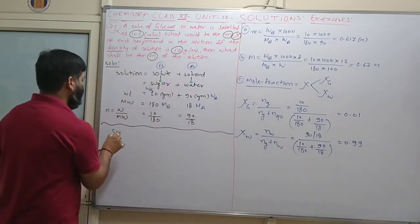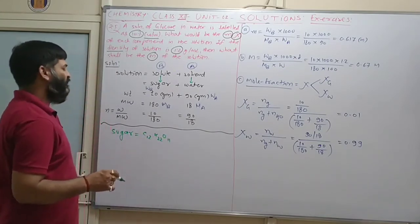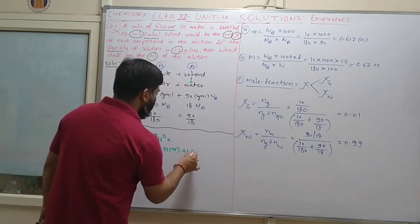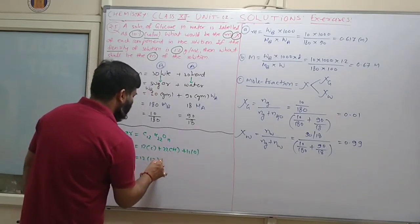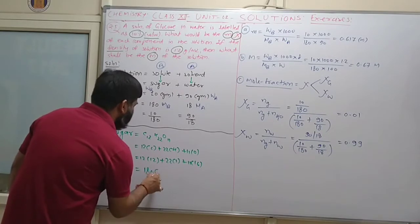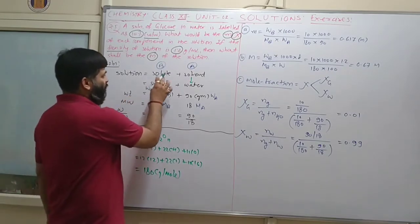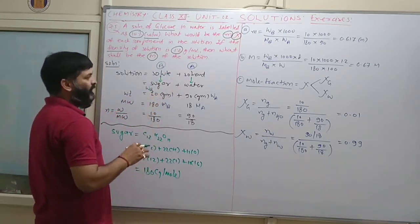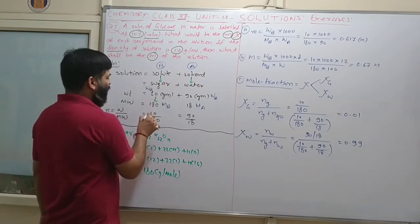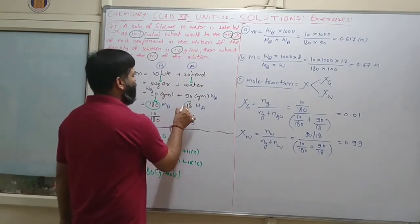Sugar is C12H22O11. Calculating its molecular weight: 12 carbons (12×12=144), 22 hydrogens (22×1=22), 11 oxygens (11×16=176) — total gives 342 g/mol. Wait, for this problem molecular weight of sugar is taken as 180 and water as 18. In 10% w/w solution: 10 g solute and 90 g solvent per 100 g solution.